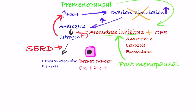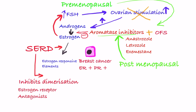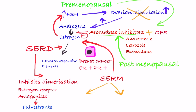Drugs which inhibit estrogen receptor dimerization are true estrogen receptor antagonists, called selective estrogen receptor down-regulators (SERDs). Estrogen binds to the receptor but no activation occurs — an example is fulvestrant. Selective estrogen receptor modulators (SERMs), as the name suggests, bind to the receptor but change its conformation in different ways such that they inhibit hormone-positive breast cancer cells rather than stimulating them — hence the term modulator, as the receptor is functioning but in a different way.